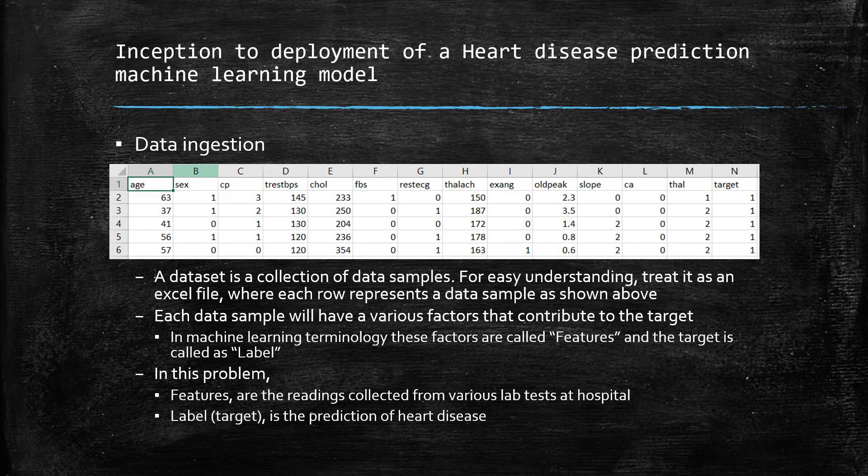Now that we have seen the demo of the mobile app and understood how it is interacting with the deployed machine learning model to predict heart diseases, let us look at a high-level overview of the machine learning pipeline that we have followed for training the machine learning model. The first step is data engineering.